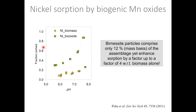On the y-axis you have the fraction of nickel sorbed as a function of pH. The yellow dots show nickel sorption by the biomass, and the green squares show nickel sorption by the biomass and by the biogenic manganese oxides. While the mineral component comprises only 12% of the sorbent on a mass basis, it enhances sorption by up to a factor of four relative to the biomass alone.